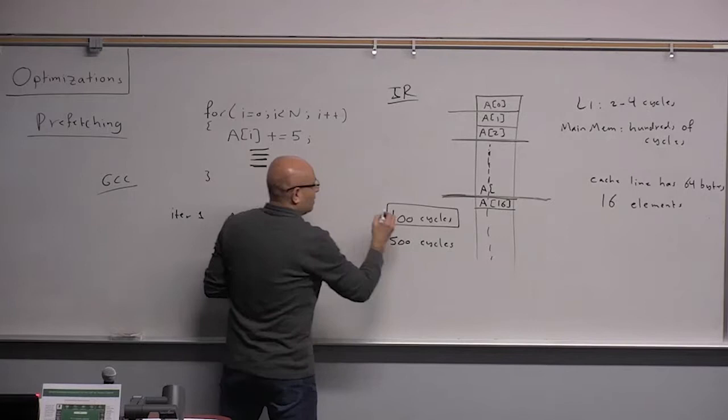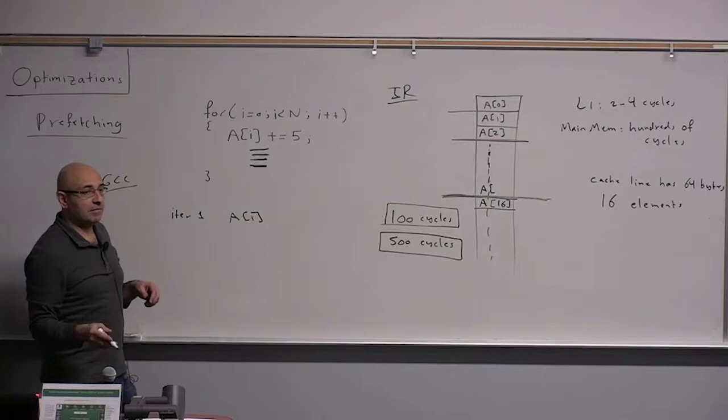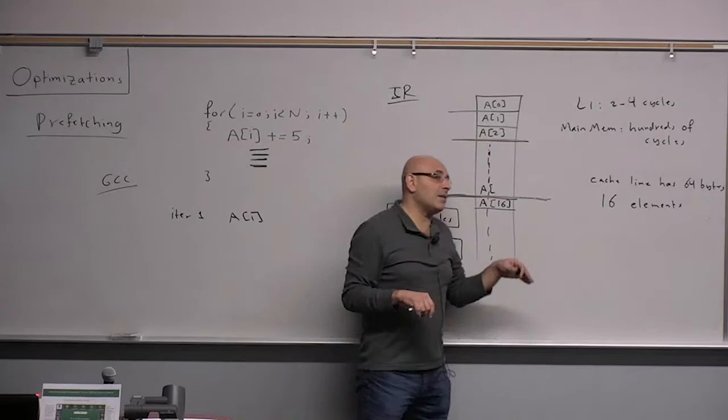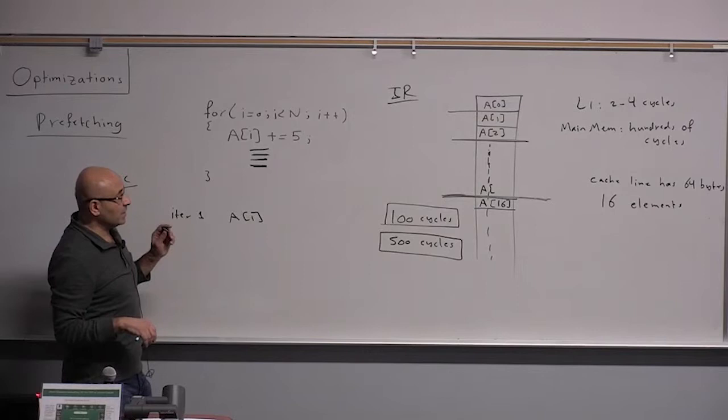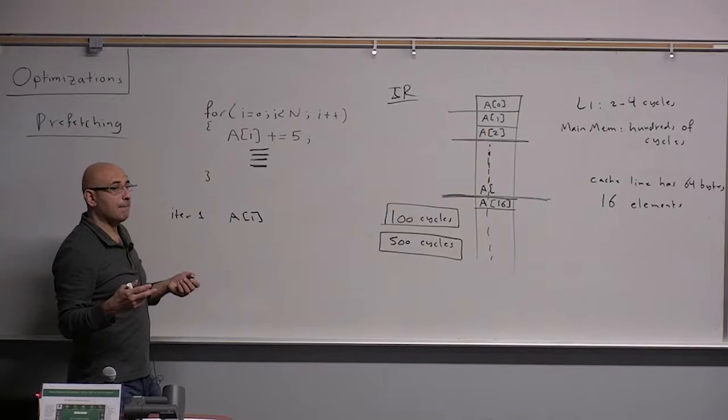Say roughly this loop will take 100 cycles, and it takes 500 cycles to bring something from main memory to cache. This means that in order to fetch a memory location and have it ready when you need it, you have to fetch how many loop iterations ahead?